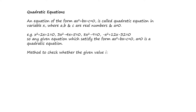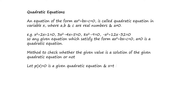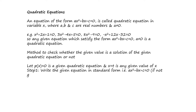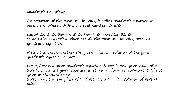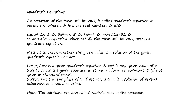Now, how to check whether a given value is a solution of a given quadratic equation or not? Let p(x) = 0 be a given quadratic equation and x = t be any given value of x. We follow a few steps. Step one: write the given equation in standard form, that is ax² + bx + c = 0. Step two: put t in the place of x. If p(t) = 0, then we can say that t is a solution of p(x) = 0; otherwise t cannot be the solution. The solution is also known as the roots or the zeros of the equation.